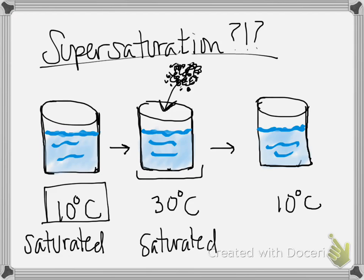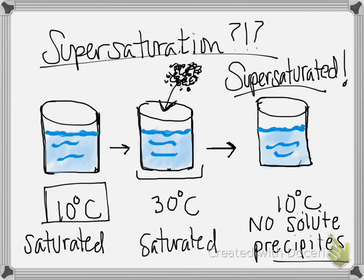Okay, so far so good. Two saturated solutions. Where does this supersaturation come in? Again, if I can cool that solution from 30 degrees back down to 10 degrees, and no solute precipitates out, then I have a supersaturated solution.